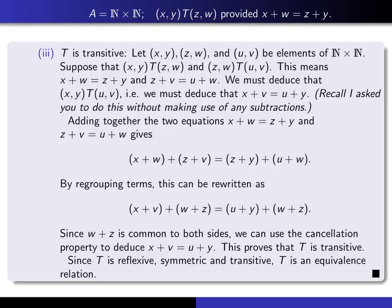This is a little bit more involved. Here's my proof that T is transitive. Let (x,y), (z,w), and (u,v) be elements of ℕ × ℕ. Suppose that (x,y)T(z,w) and (z,w)T(u,v). This means x + w = z + y and z + v = u + w. We must deduce that (x,y)T(u,v), i.e., we must deduce x + v = u + y.